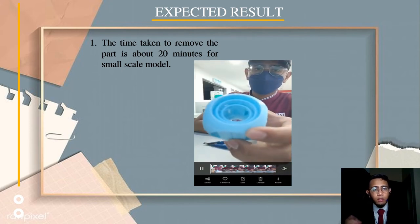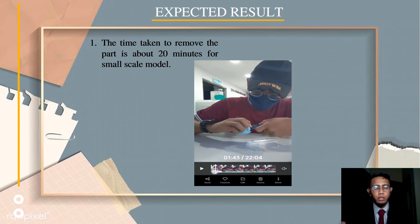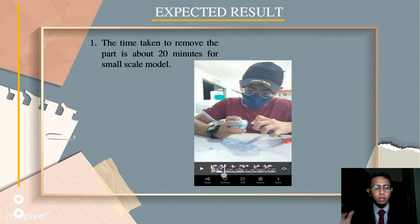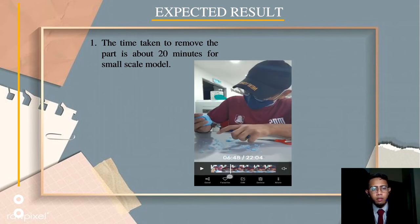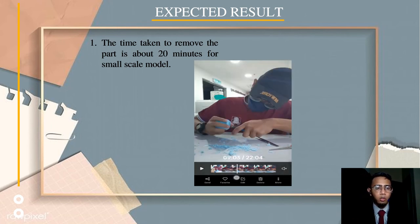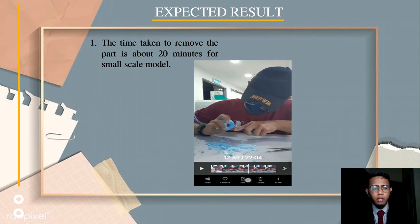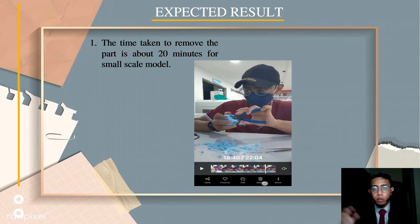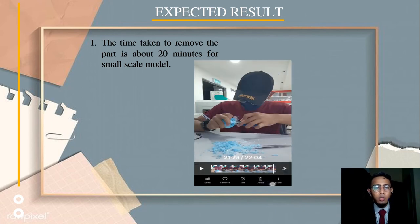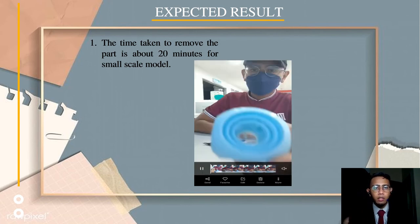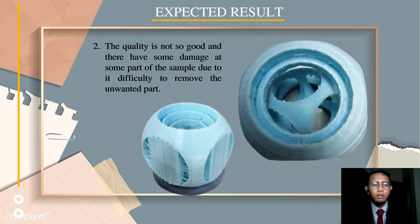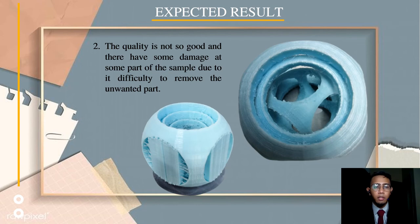For the expected result, after finishing the printing process, I needed to perform the removing process to take off the support structure on the gyro. During the process, the time to remove the support was about 20 minutes for a small scale model. I believe that if PVA is used, the time should be much faster compared to using PLA alone. After finishing the removing process, I did observation on the quality of the product, and the result was not very good — there was some damage at certain parts due to the difficulty of removing the inner support.